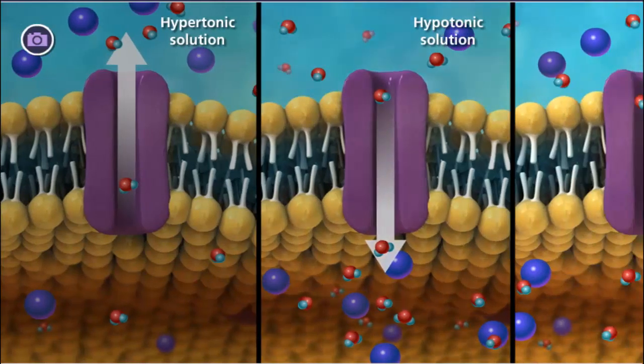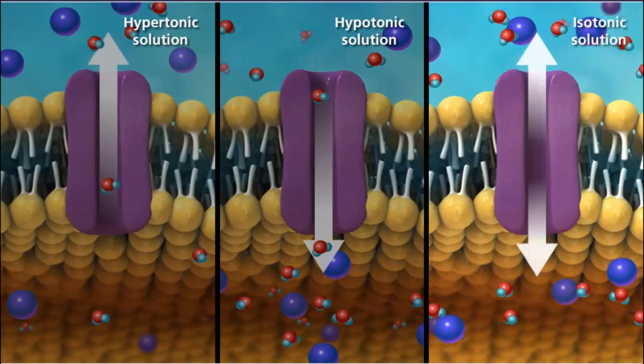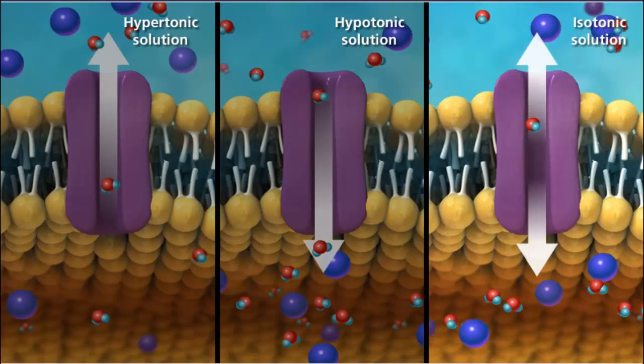When the solutions on either side of the membrane reach equilibrium, they are referred to as isotonic.